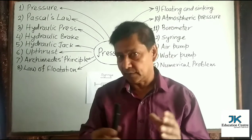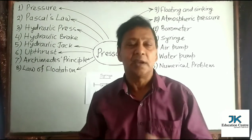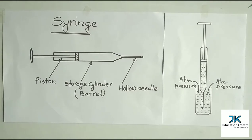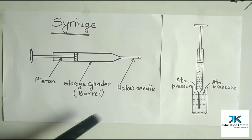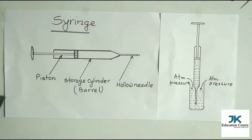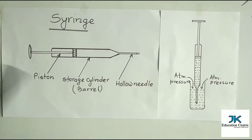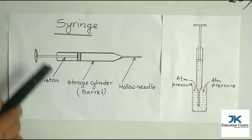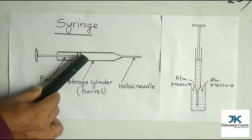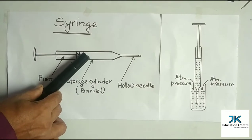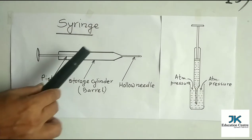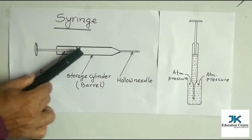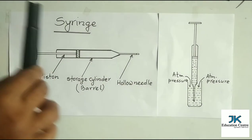Now I want to show you a diagram of syringe. If you are told to draw a diagram of syringe, you can draw it this way — a simple representation. Look at this: it has three parts. One is the hollow needle which is at the tip. Another is a storage cylinder, also called a barrel. The third is the piston which moves forward and backward, being very close to the inner wall of the storage cylinder. This means it can push air or liquid in the front side because it is in very close contact with the inner wall.